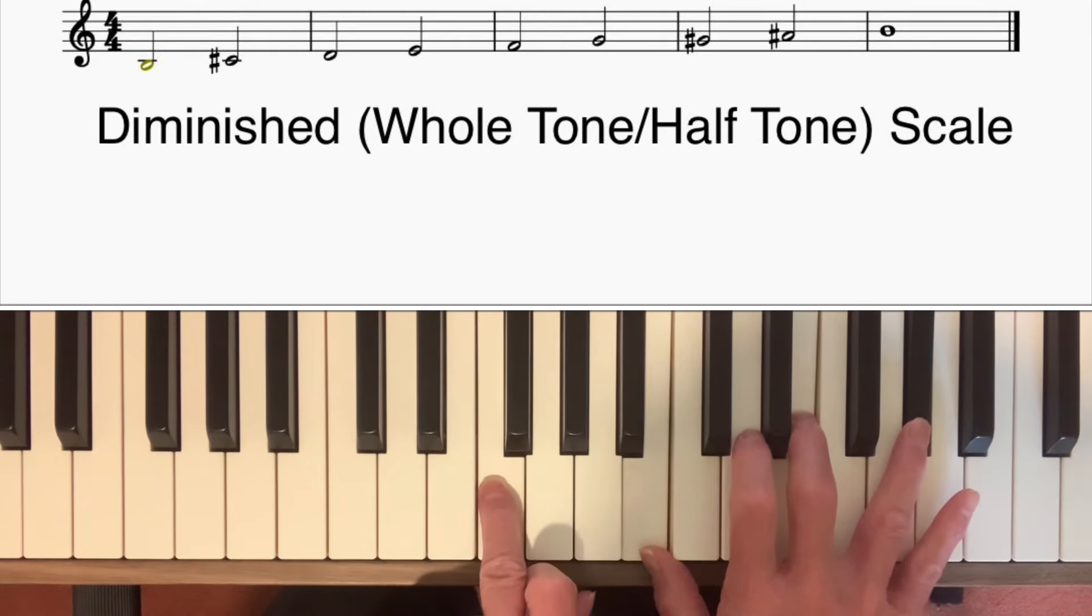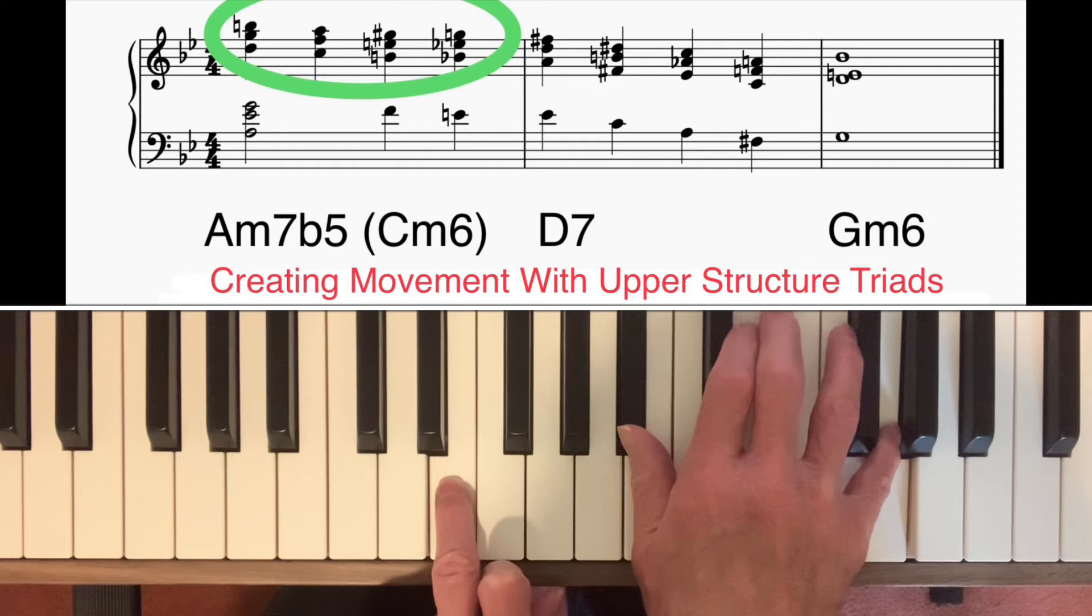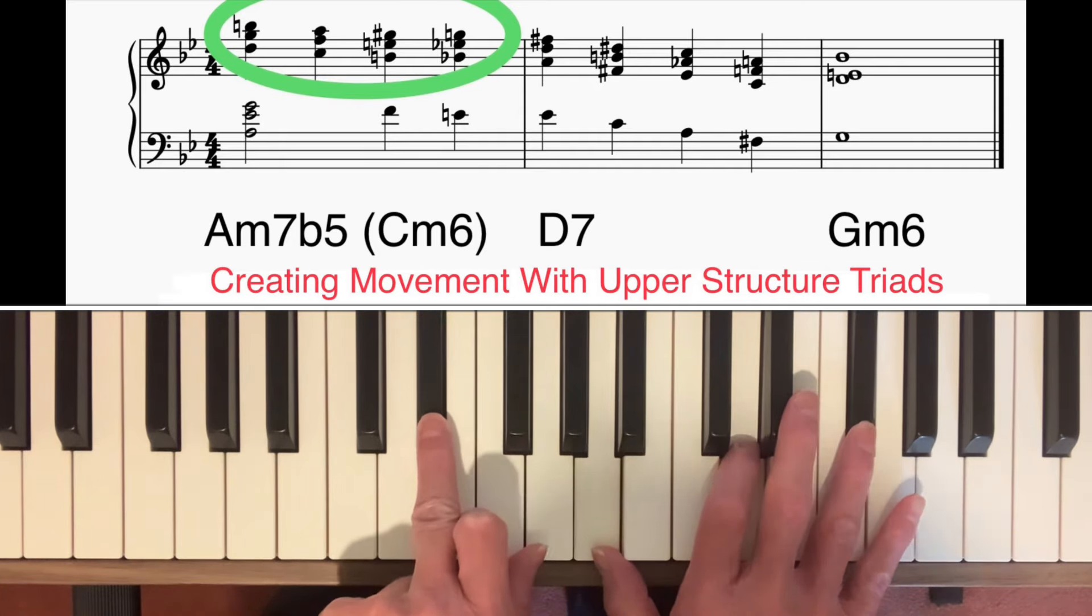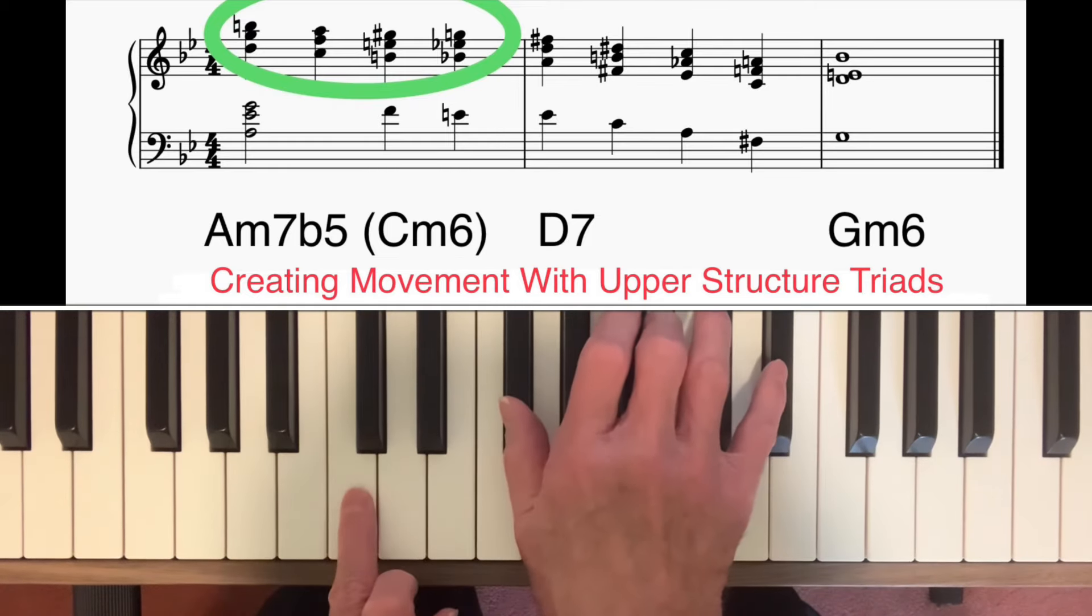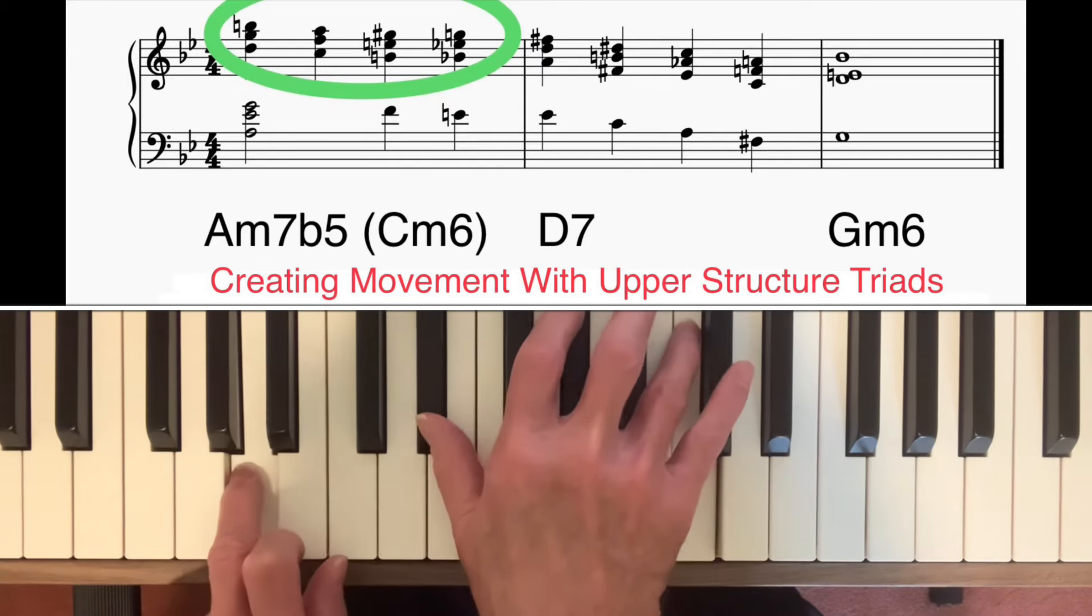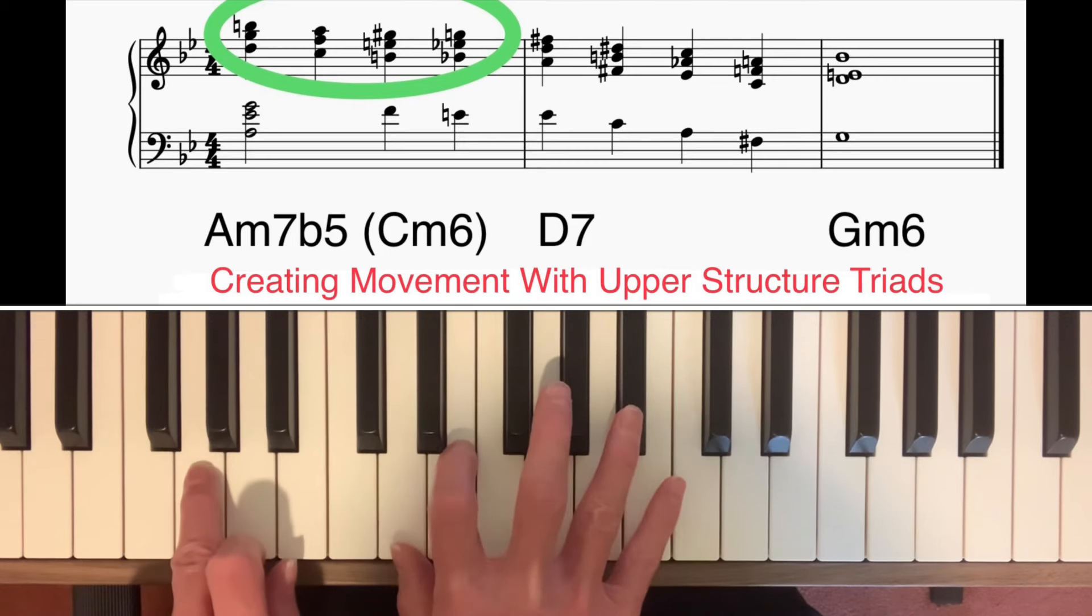I then use what we call parallel motion. I move everything down one semitone and another semitone. And that takes me to exactly the same voicing, but this time on a D7 chord. And then I go through all the four different positions that you can play that in on the D7 chord. And then finally, resolve this onto the tonic minor G minor 6.